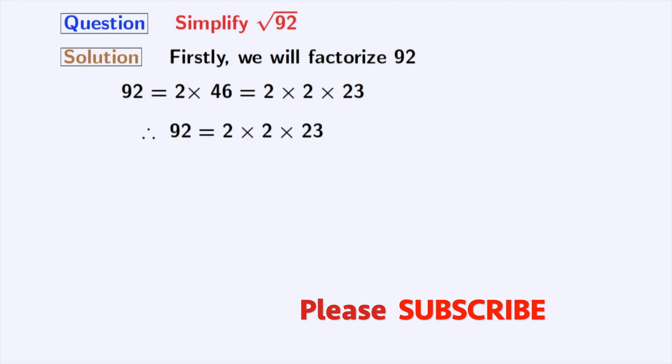So finally, we get 92 is equal to 2 times 2 times 23. Now we will take square root on both sides. Doing that, we get square root of 92 is equal to square root of 2 times 2 times 23.